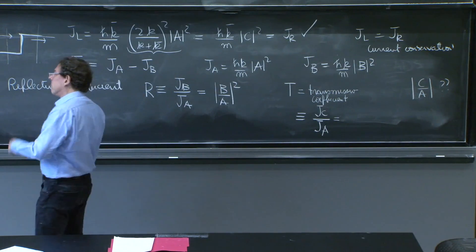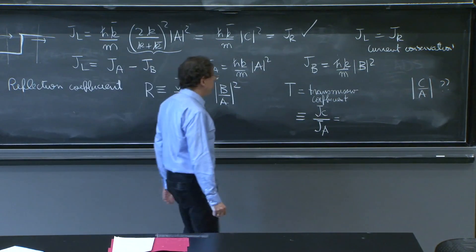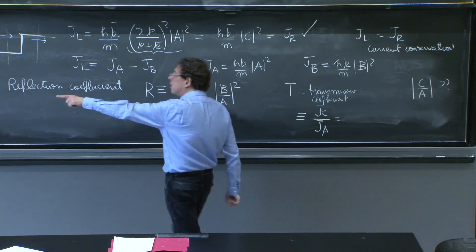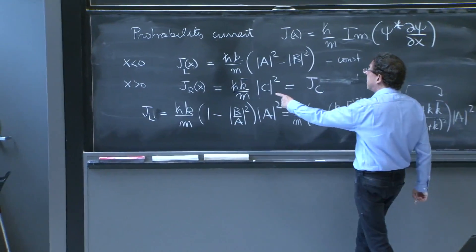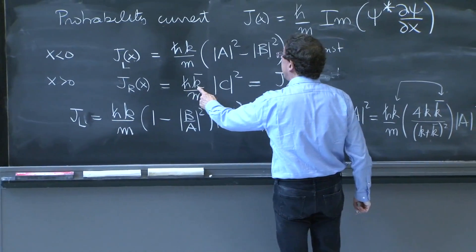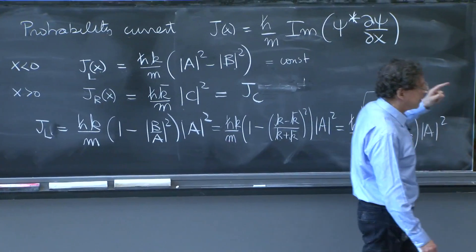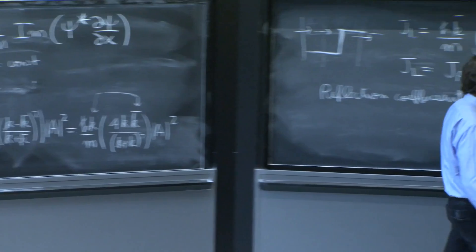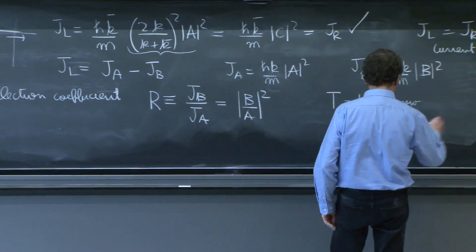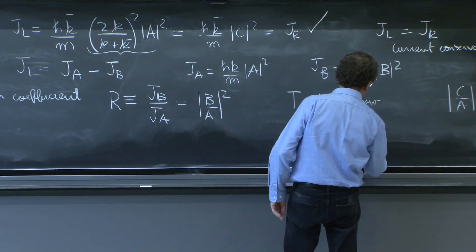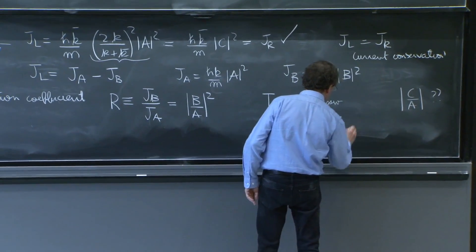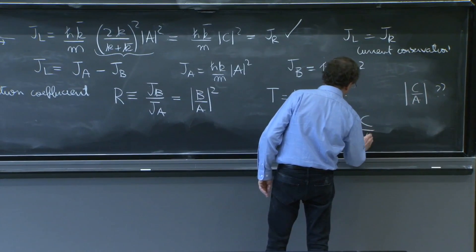And then jc divided by ja, jc has an h bar k bar. And ja has a k. So this is not equal to this ratio, but it's actually k bar over k c over a.